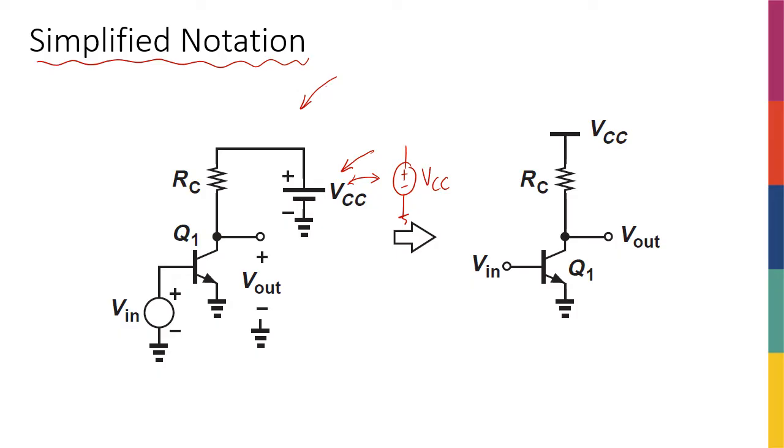Similarly for an input signal or input voltage in general, we used a voltage source kind of symbol. It could be just a simple circle with plus and minus out of it or inside of it, but we always used the voltage source kind of symbol for that.